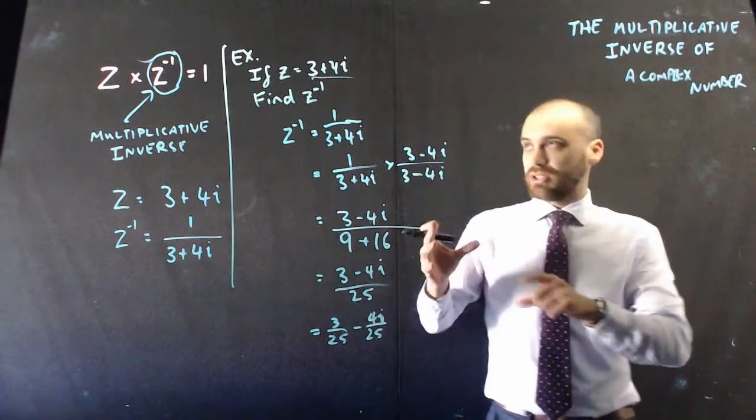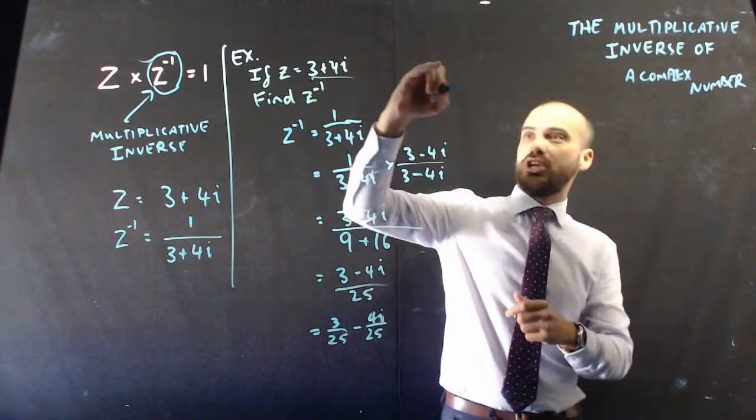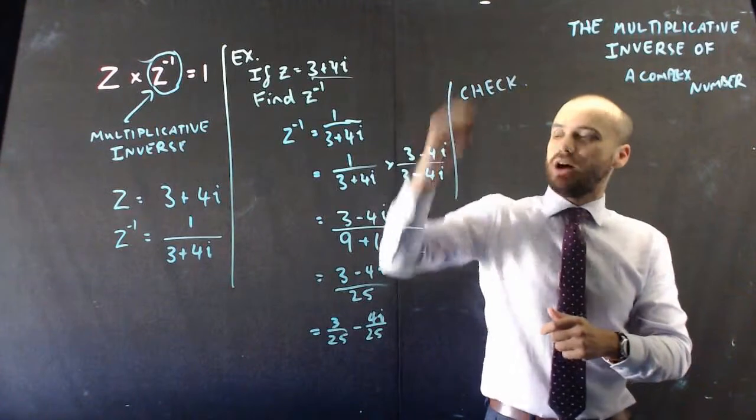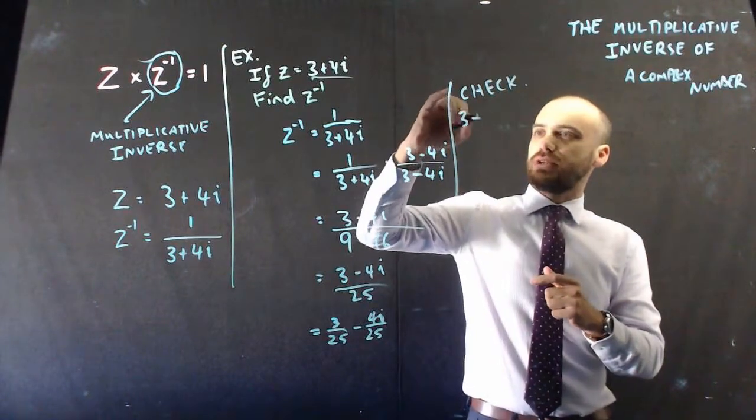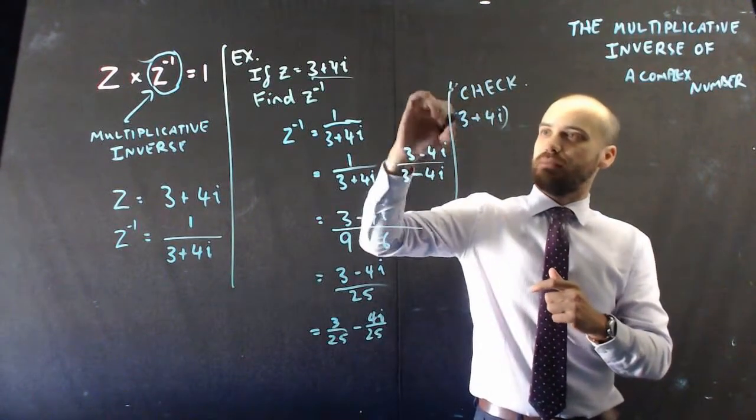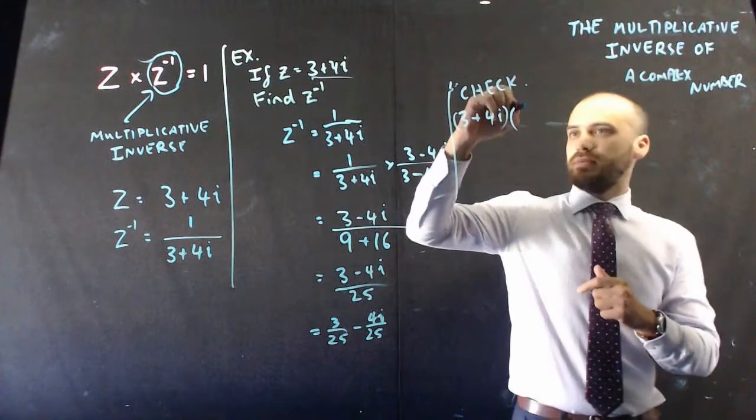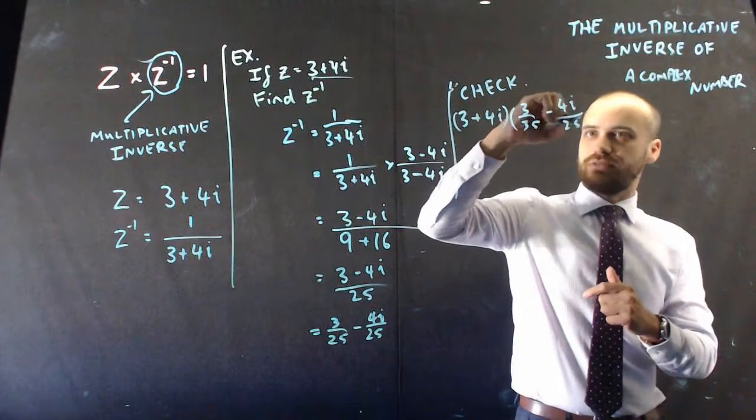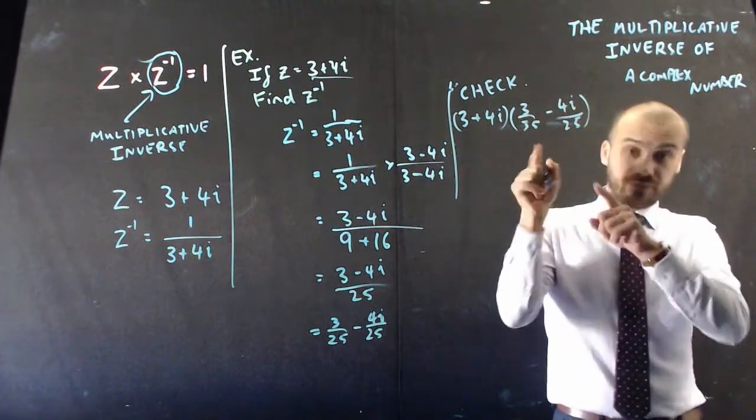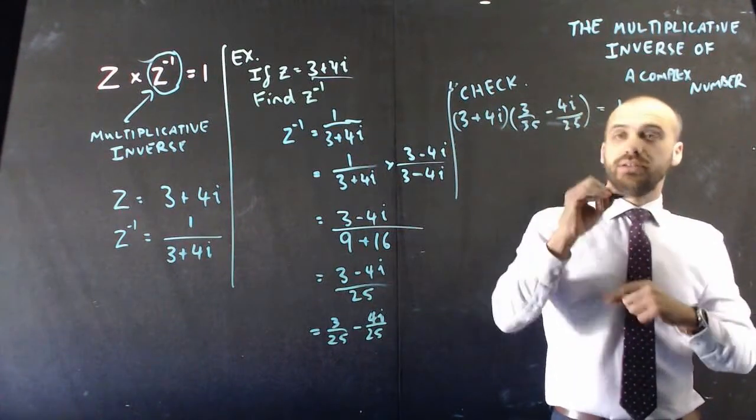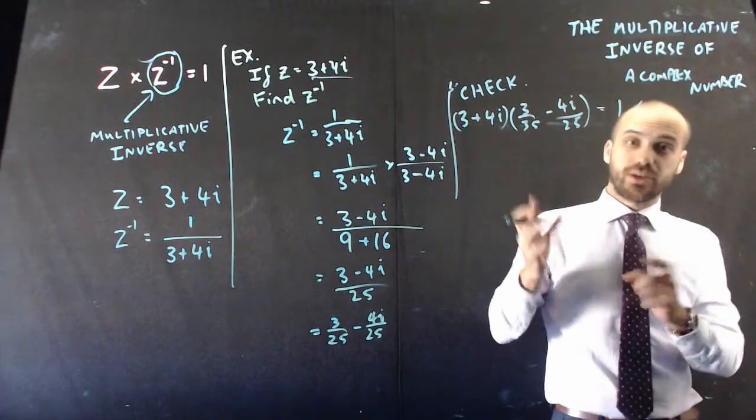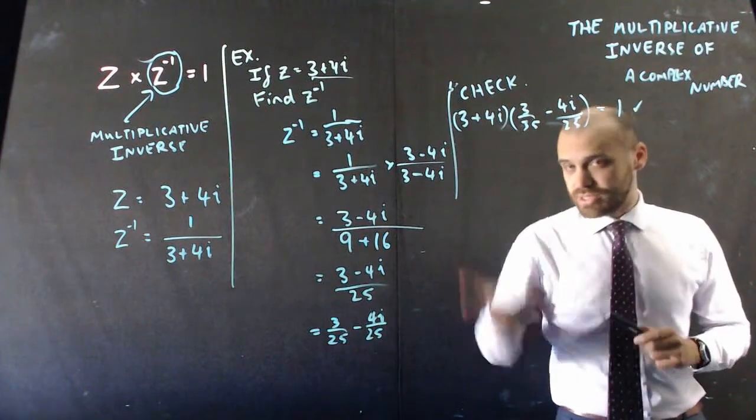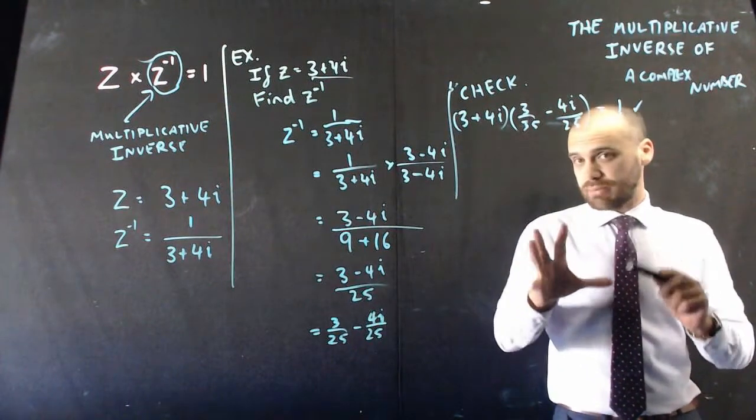And I could prove that. I could just do 3 plus 4i, so I could check. And I know a lot of us are really good at checking stuff. I could check this by doing 3 plus 4i and multiplying it by 3 over 25 minus 4i over 25. And if that is equal to 1, then I'm correct. If it's not equal to 1, then something's gone horribly wrong. I'm not going to go through the business of checking that now. I'm just going to get you to take my word for it.